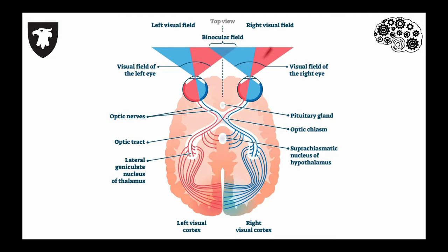For example, the inside part of the right eye and the outside part of the left eye both detect stimuli in the right visual field, shown in red.